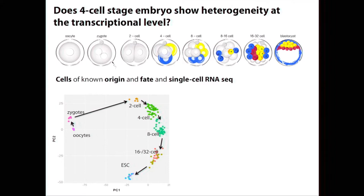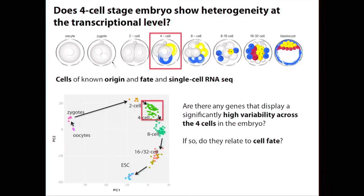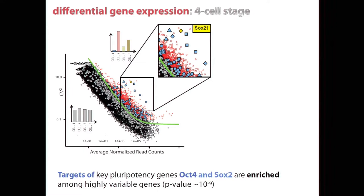When this new technology appeared, we looked at gene expression patterns in individual cells throughout the whole pre-implantation development. When we focused on the four-cell stage embryo, we asked whether we could identify genes expressed differentially at this stage, and whether those genes are important for cell fate specification. We identified a cloud of genes highly differentially expressed at the four-cell stage, shown in red. Many of them are targets of the two most important pluripotency transcription factors in mouse and human embryo: SOX2 and OCT4.